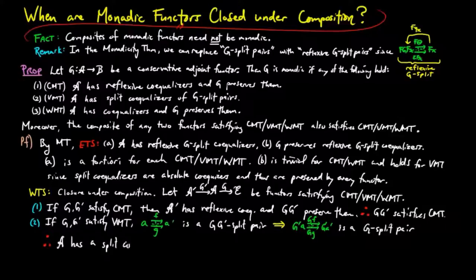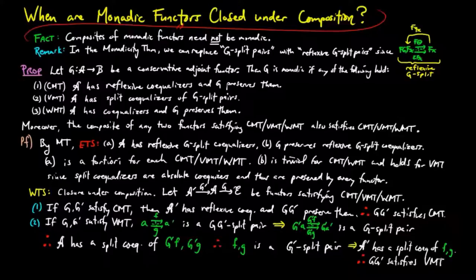Therefore, the category A has a split co-equalizer of g' f, g' g, and thus f, g is a g' split pair, implying A' has a split co-equalizer of f, g. Therefore, we have g, g' satisfies VMT.